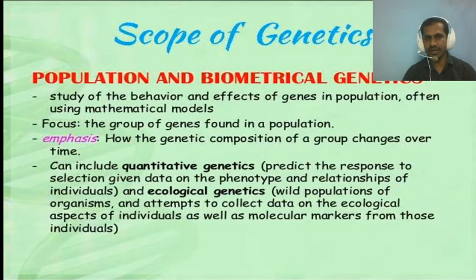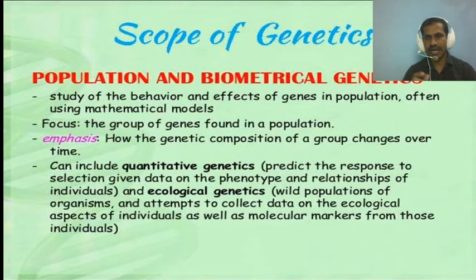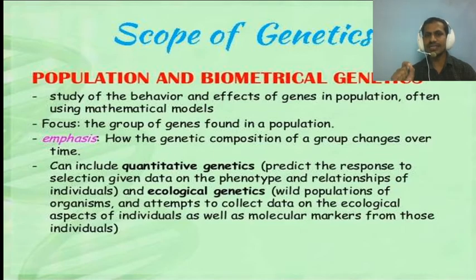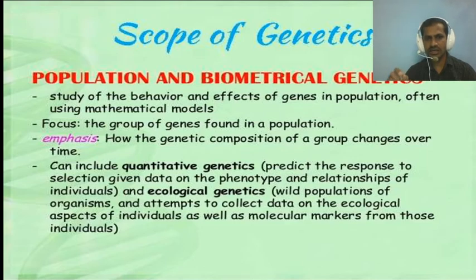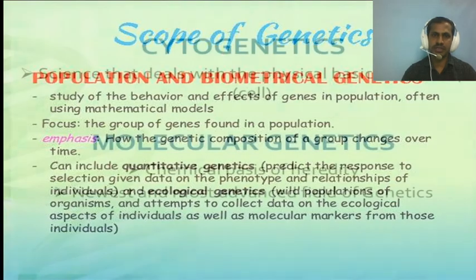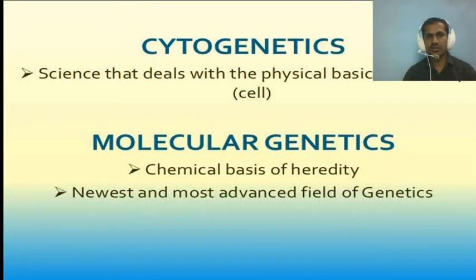The third scope is population and biomedical genetics, which studies the behavior and effect of genes in a population, often using mathematical or statistical models. It focuses on groups of genes found in a population and emphasizes how the genetic composition of a group changes over time. It also covers quantitative genetics, ecological genetics, and cytogenetics.